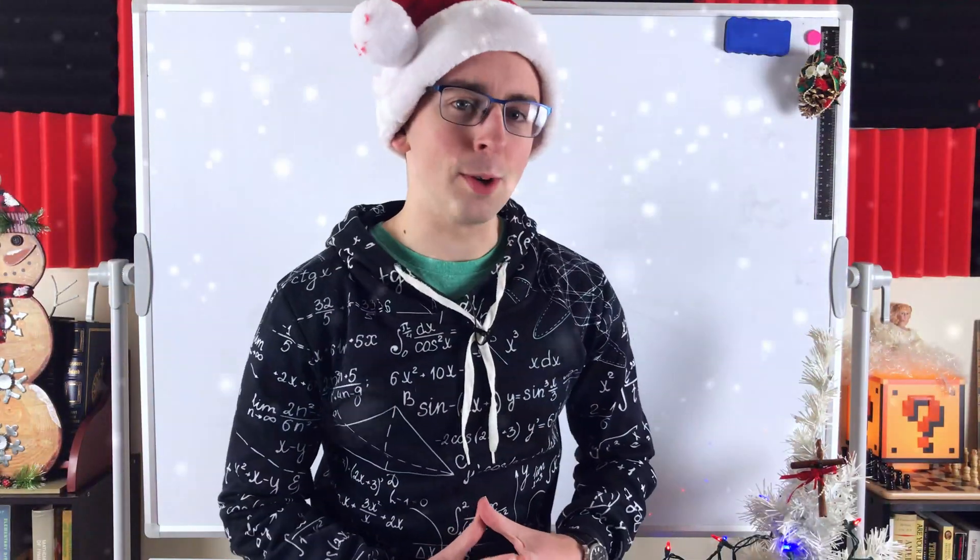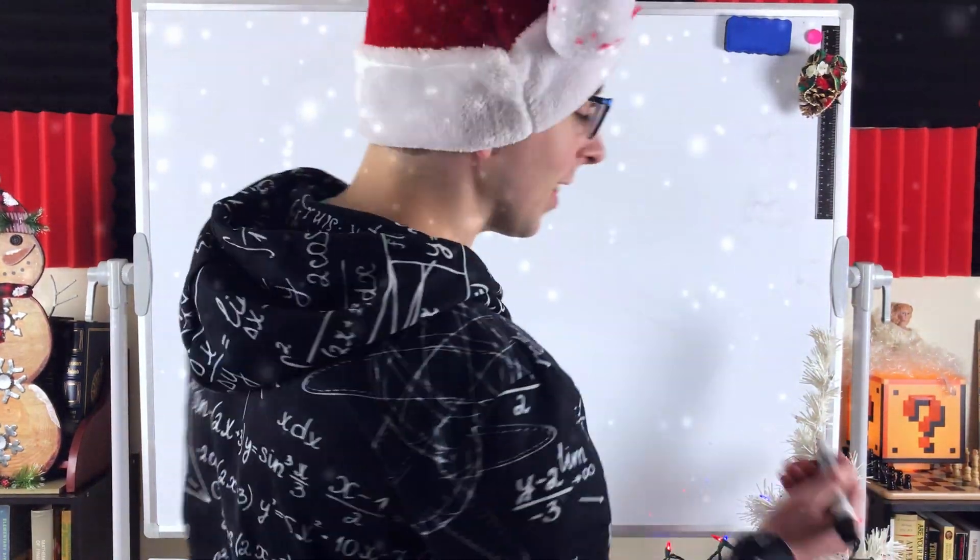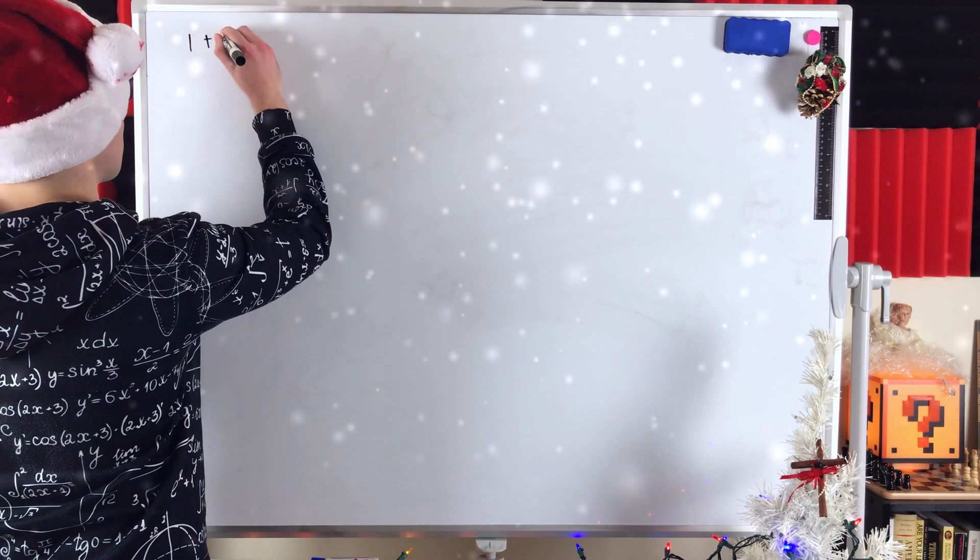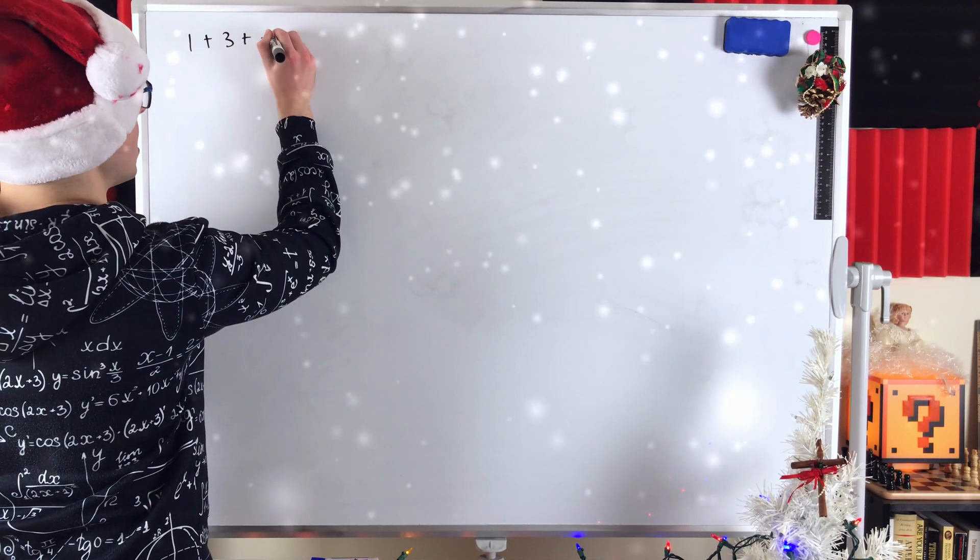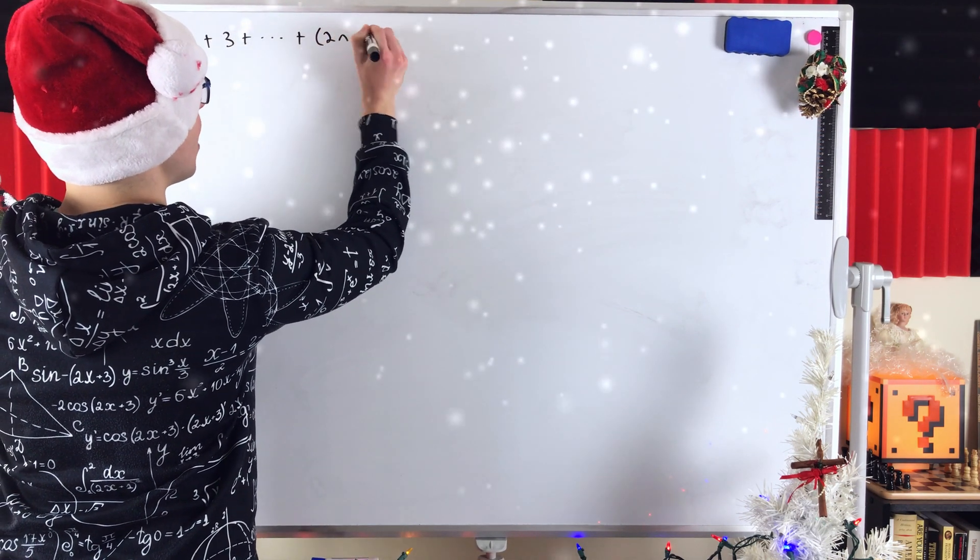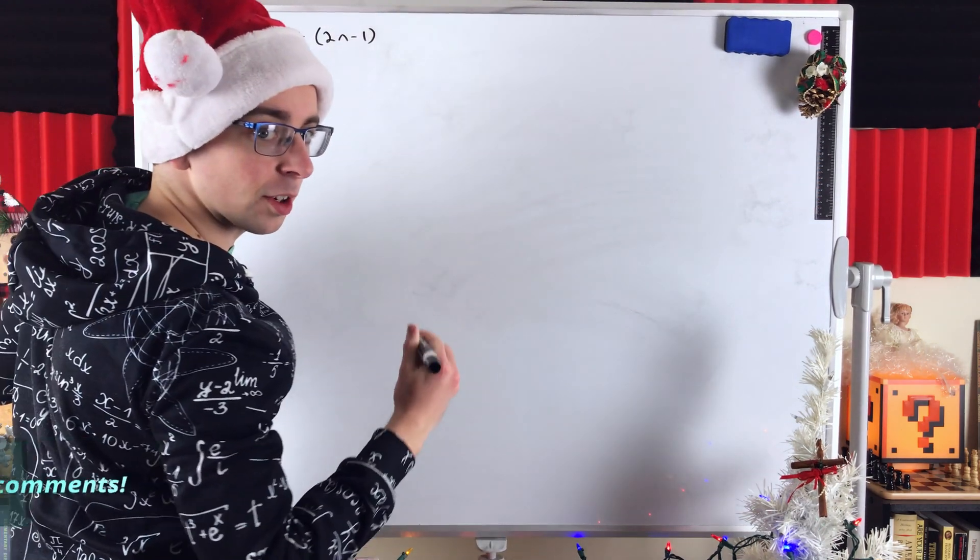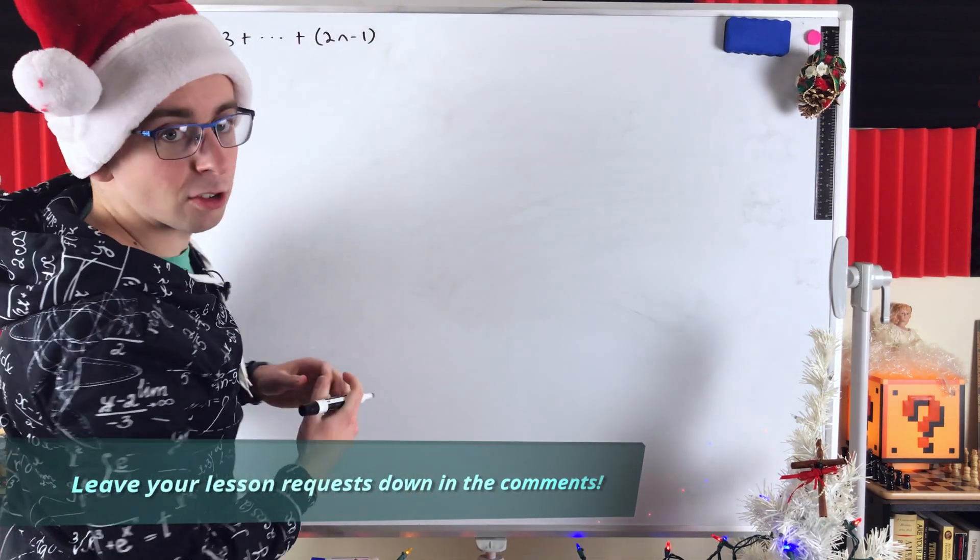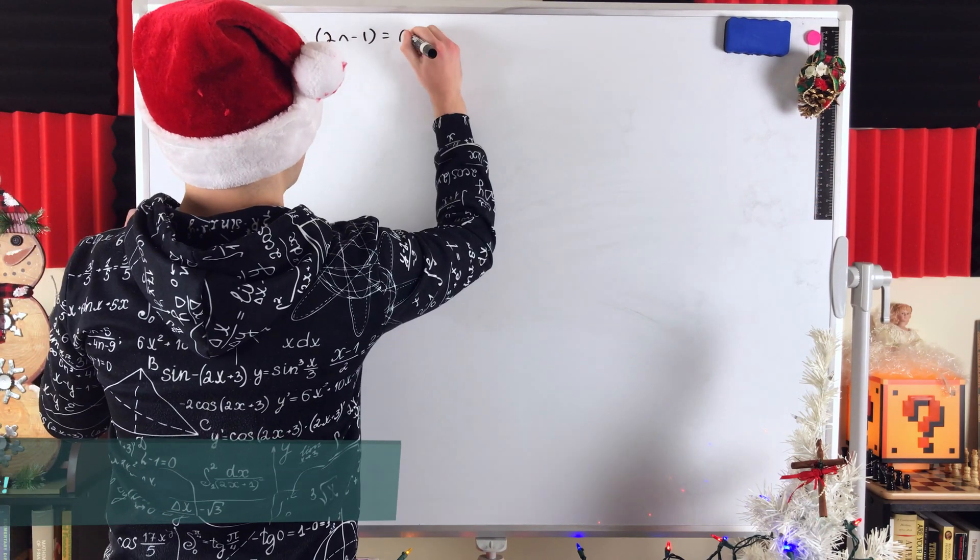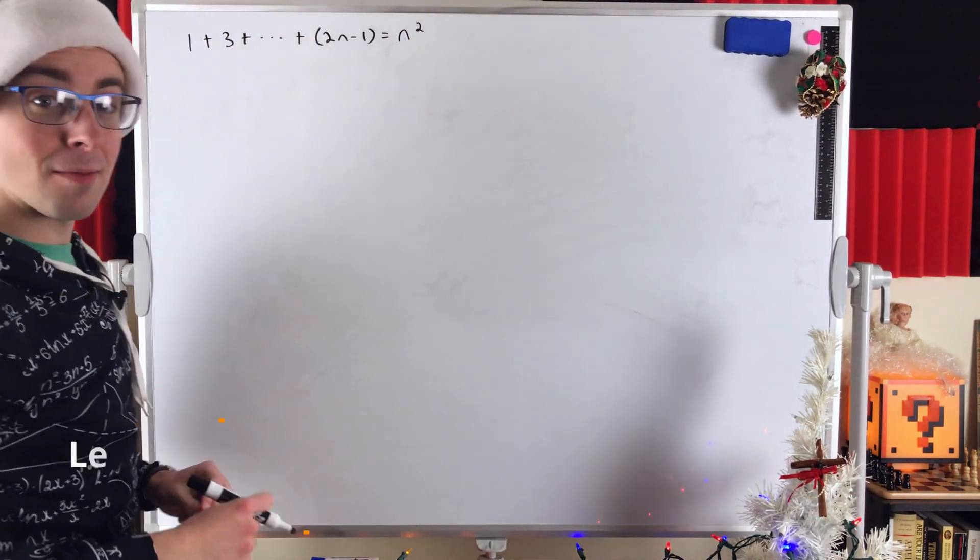Hey everyone, got a cool one for you today. In today's Wrath of Math lesson, we'll be proving that the sum of the first n odd numbers - so 1 plus 3 and so on, all the way up to plus 2n minus 1 - this is equal to n squared. That's pretty cool.